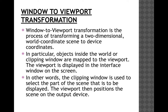The viewing transformation maps picture coordinates from the world coordinate system to display coordinate systems. To perform the viewing transformation, the following steps are needed: first, converting world coordinates to viewing coordinates; then normalizing the viewing coordinates; and then converting normalized viewing coordinates to the device coordinates.